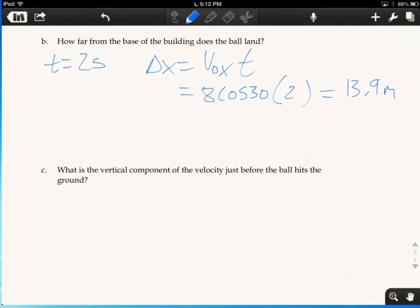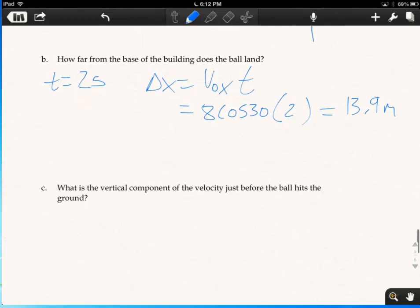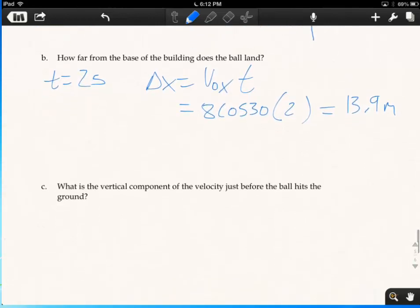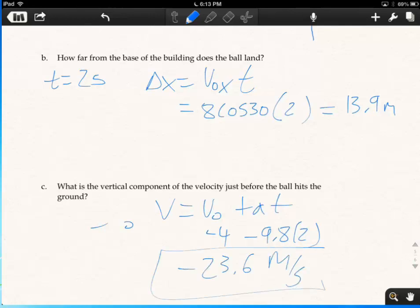And finally, what is the vertical component of the velocity just before the ball hits the ground? So how fast is it going when it lands? So I'm going to use the first equation. It'll be simpler, right? v equals v naught plus a t. I know this. It's negative 4. I know this. Minus 9.8. I know t is 2. So I have negative 19.6 minus 4 is negative 23.6 meters per second. Cool. And that takes care of it. Alright.